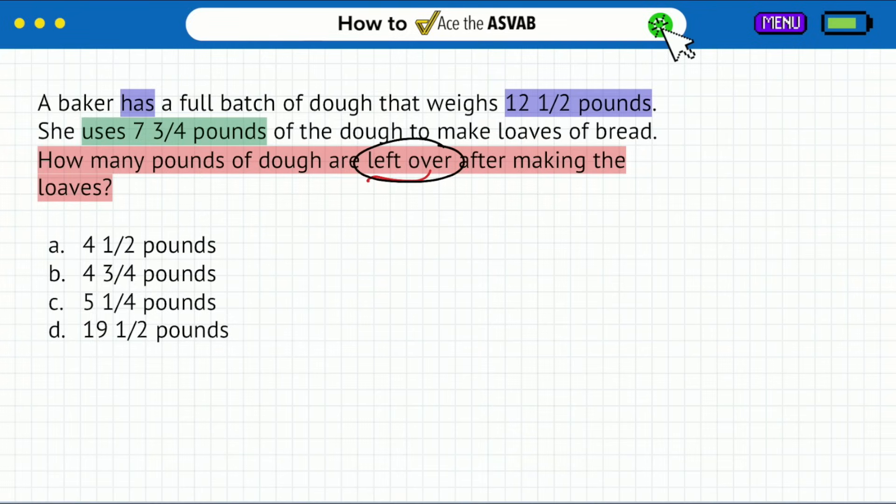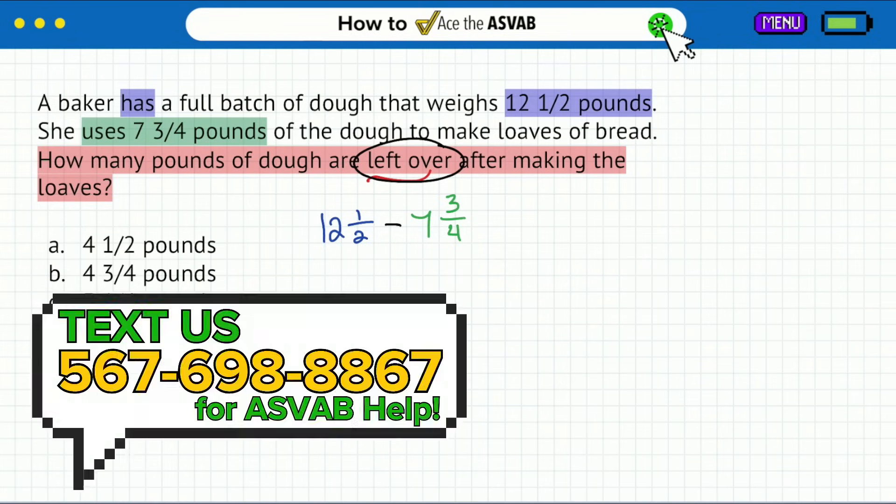So the main setup here is to find out how much is left over. We'll simply proceed to say we have 12 and a half pounds, and we're going to be subtracting from that seven and three quarters. So let's go ahead, take care of business. And don't forget, if today's Monday for you, we have a free class on Zoom tonight at 6pm Eastern time for two hours.